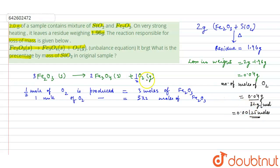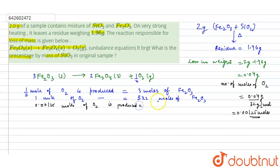So 0.00125 moles of oxygen is produced. From how many moles of Fe2O3? It will be equal to 0.00125 multiplied by 6 moles of Fe2O3, which equals 0.0075 moles of Fe2O3.